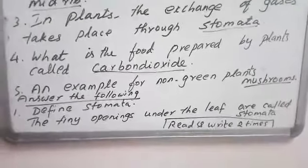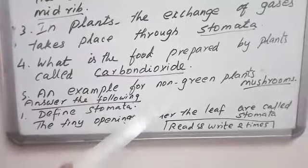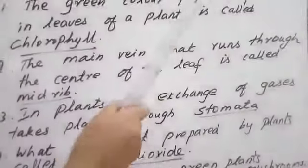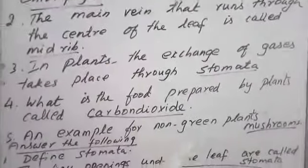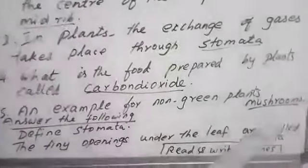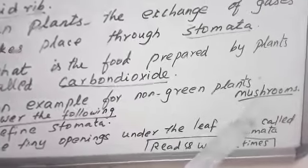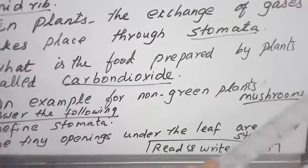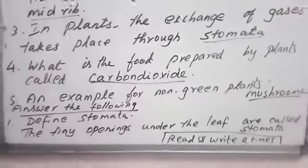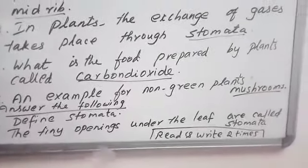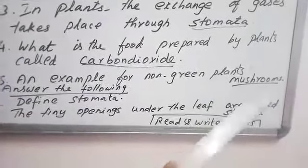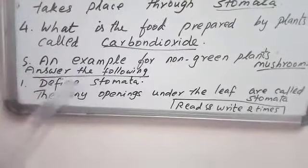An example for non-green plants. Non-green plants means it does not have the pigment. It is known as non-green plants — mushroom: M-U-S-H-R-O-O-M, mushroom. An example for non-green plants is mushroom.